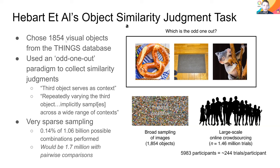With almost 2000 objects, if you're doing triad odd-one-out judgments there are about a billion possible combinations, and they did not have the money to spend on Mechanical Turk for a billion combinations. Instead they very sparsely sampled the set of possible combinations — only 0.14% of those — which still amounted to 1.46 million trials spread across almost 6000 participants. That's a bit bigger than most experiments we've done in the lab.